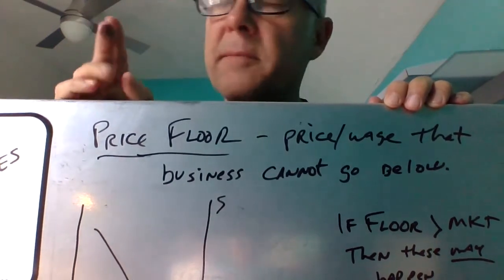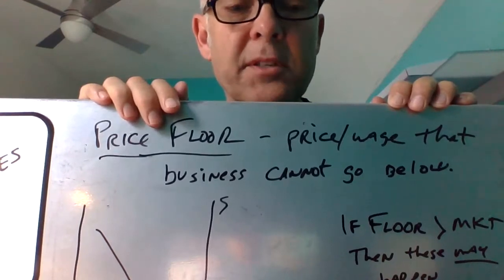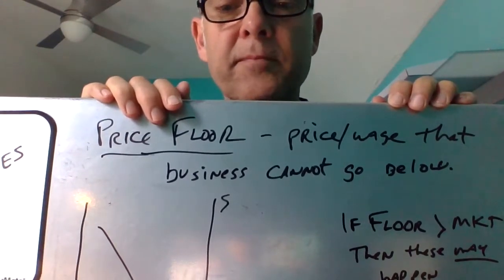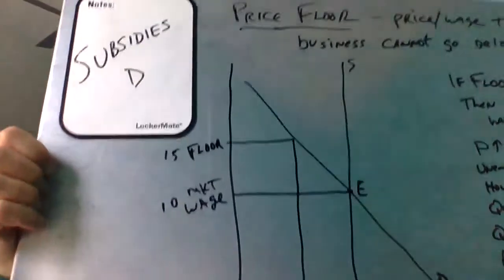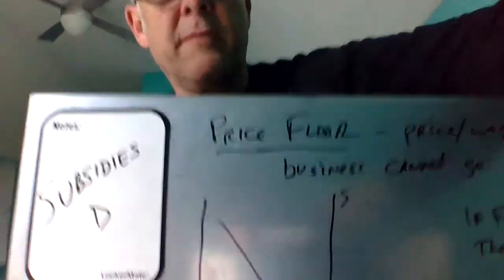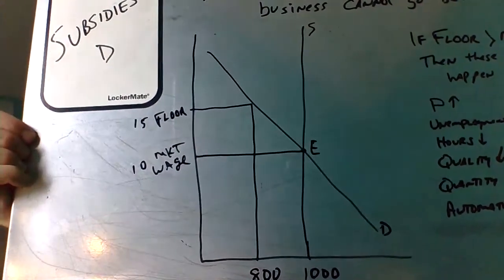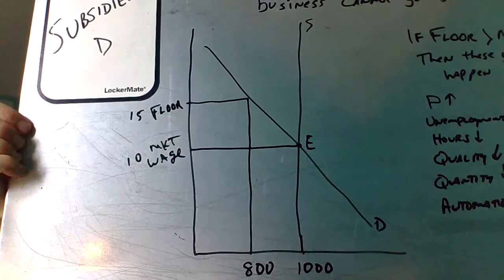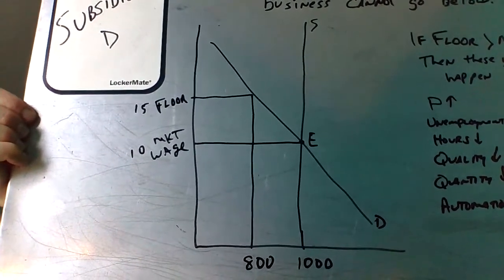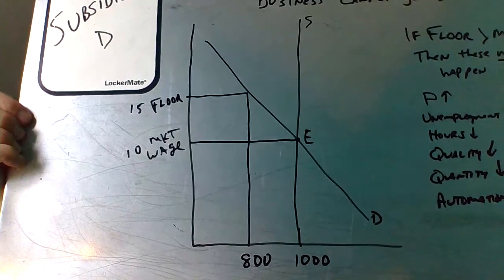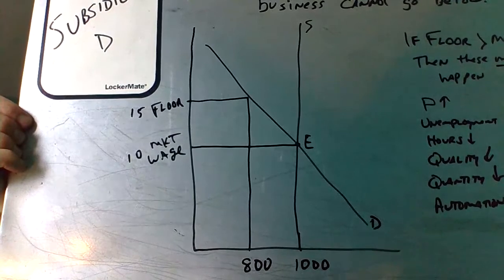And it's designed to stop businesses from taking advantage, if you will. Okay, so what I first like you to do is to draw this graph or look at this graph. And this is a static graph of wage market. So we're just going to say you've got a thousand workers.